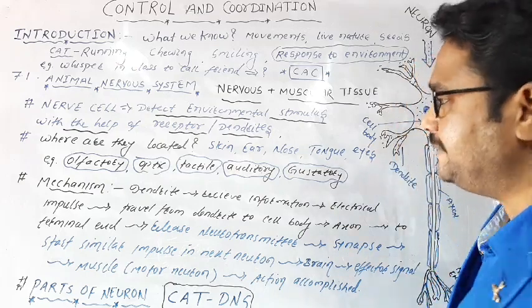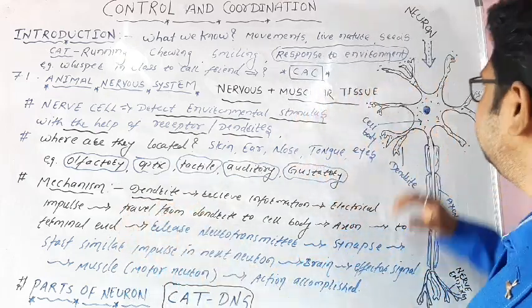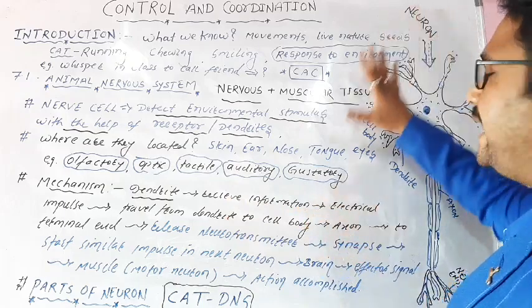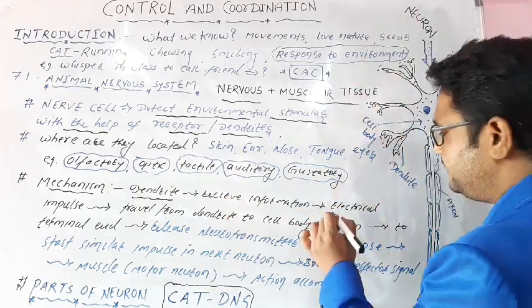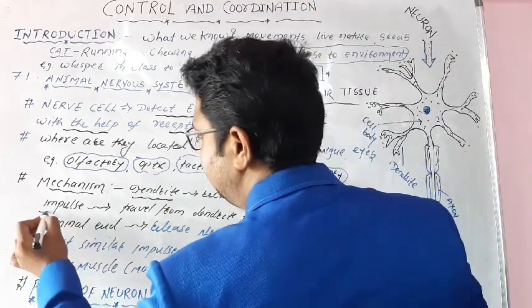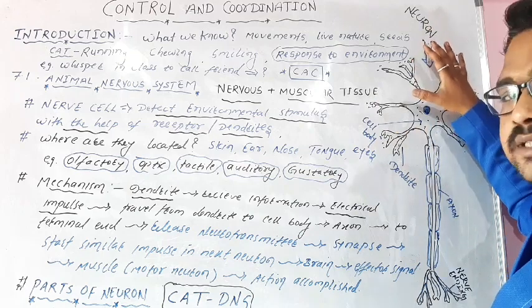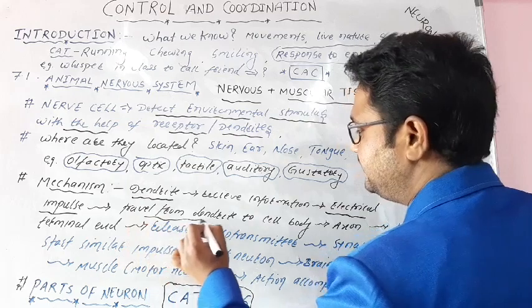The dendrite or receiving part of this neuron receives information from the environment, from outside. Then it sets up a chemical reaction and generates an electrical impulse. This electrical impulse from the dendrite goes inside where it travels through the cytone or cell body.